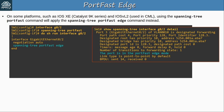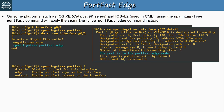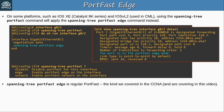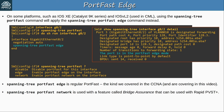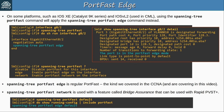Using 'show spanning-tree interface detail', you can confirm the port is in PortFast edge mode. The three options for the portfast command are: disable, edge, and network. 'Spanning-tree portfast edge' is regular PortFast, renamed because it's meant for edge ports connected to end hosts. 'Spanning-tree portfast network' is used with a feature called bridge assurance that can be used with Rapid PVST+. When configuring portfast default, it is changed to 'portfast edge default' in the config — both commands have the same effect.